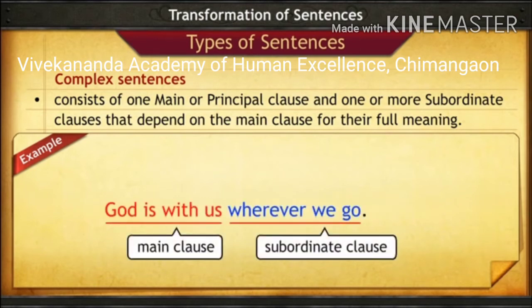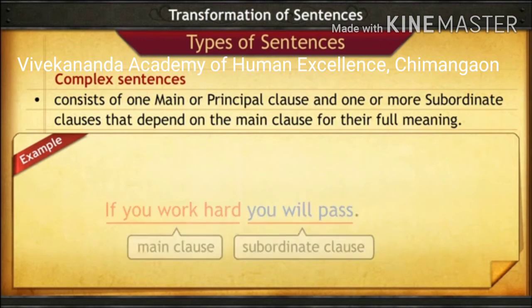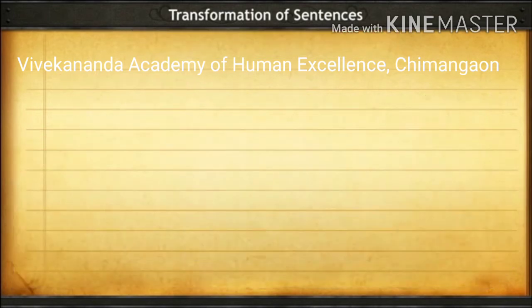'God is with us wherever we go.' Here 'God is with us' is the main clause and 'wherever we go' is the subordinate clause. 'If you work hard, you will pass.' Here again two clauses are joined — a main clause and a subordinate clause.